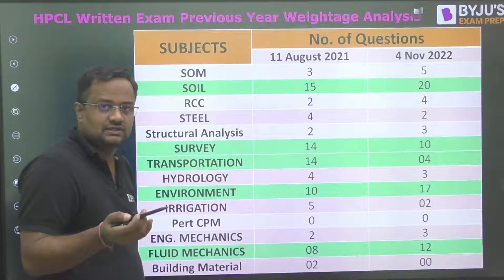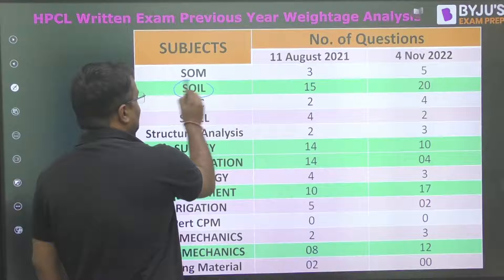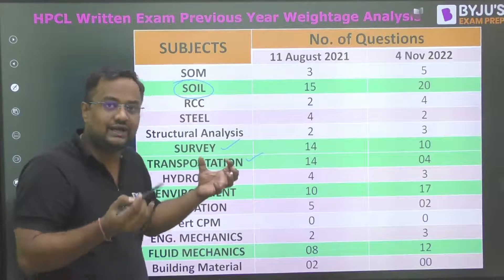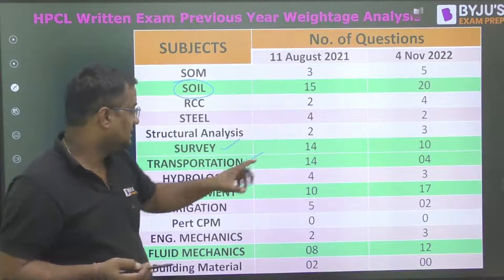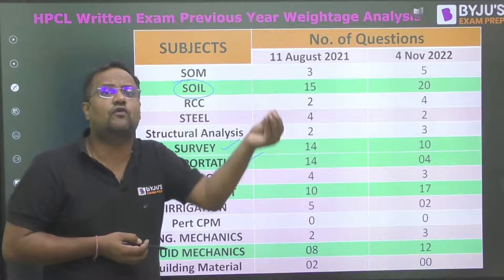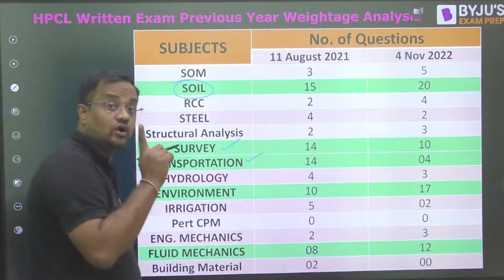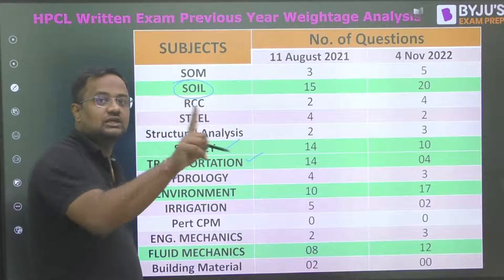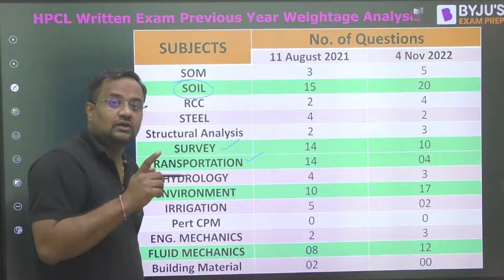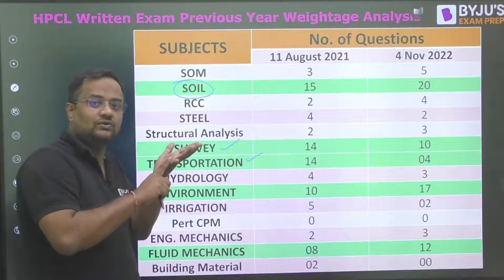Like engineering services and GATE, the highest weightage here is also for soil mechanics, no doubt. Subjects like environment and transportation have a large weightage given their large syllabus. Survey and transportation, despite having about one-fourth the syllabus size of soil and environment, still carry high weightage. In survey, most questions are from remote sensing, GPS, and triangulation — topics not commonly asked in GATE — along with compass surveying, latitude, departure, and leveling.